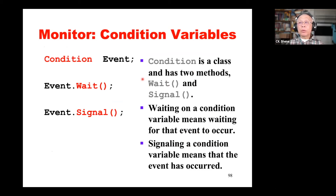Regarding condition variables: in Threatmentor, there is a class called condition. You simply declare a condition variable using "condition event". This event is a condition variable — you can wait on it and signal it. You could also use a pointer with new to create a condition event, in which case you use arrow notation rather than dot notation.